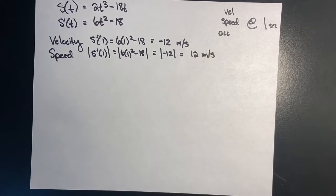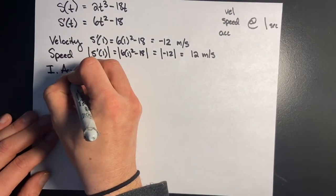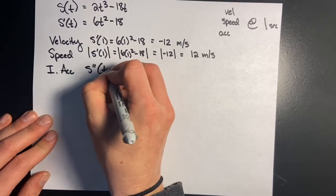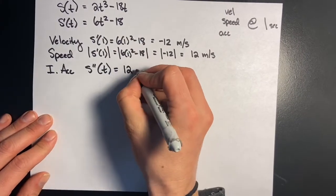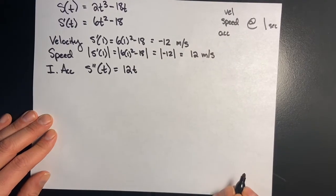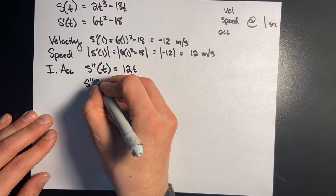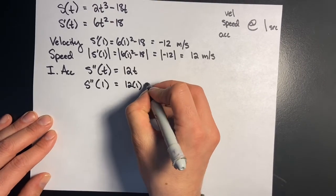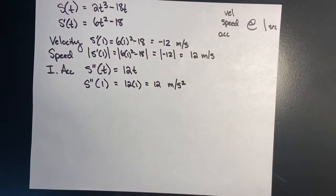To find instantaneous acceleration, I take the second derivative: s''(t) equals 12t. To find instantaneous acceleration at one second, I plug in 1 and get 12 times 1, which is 12 meters per second squared.